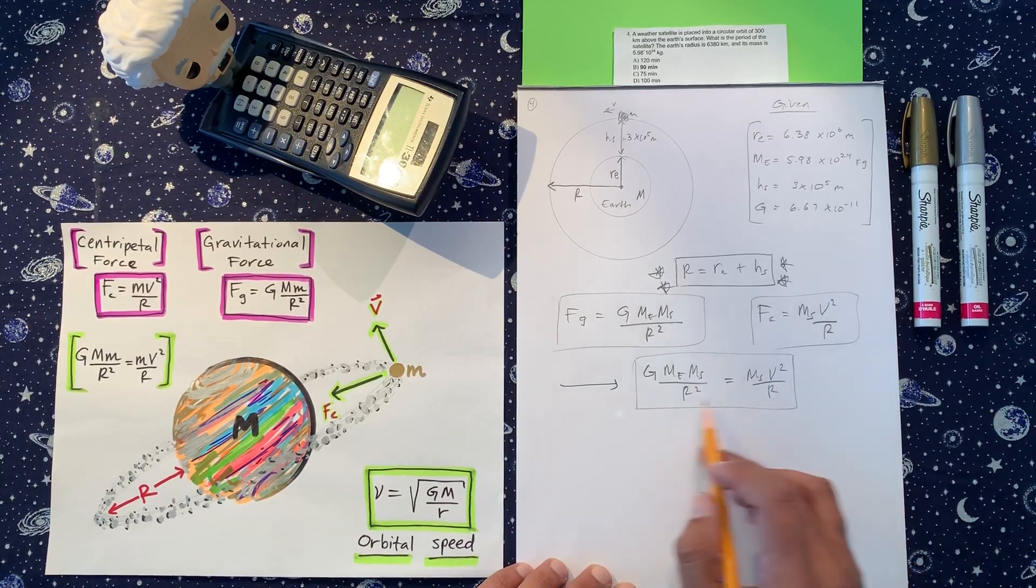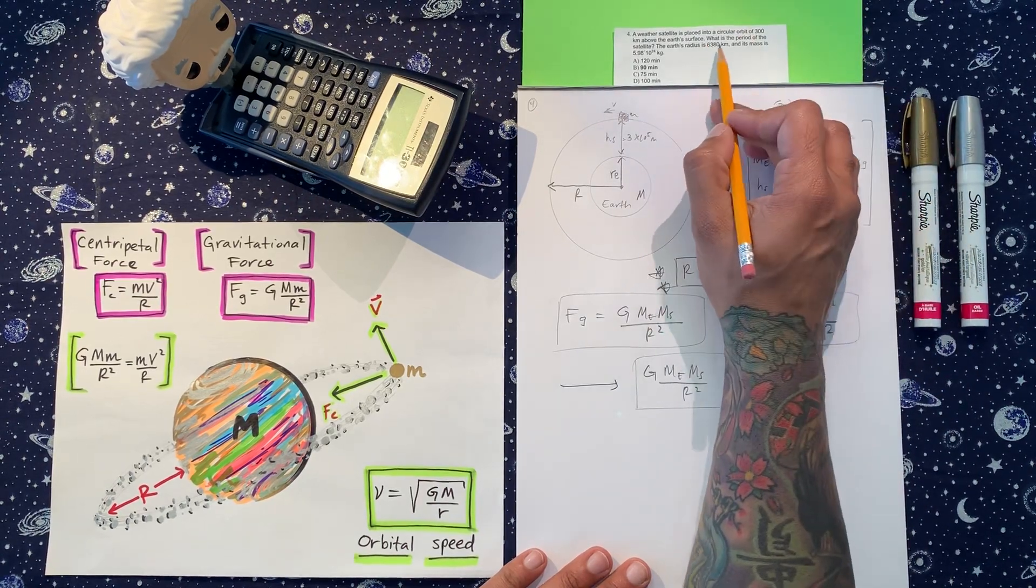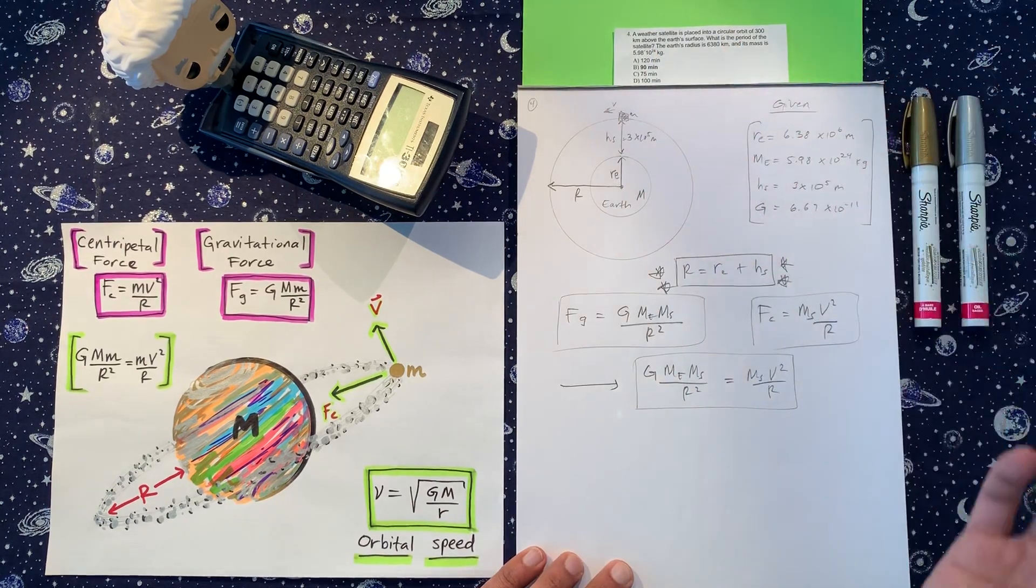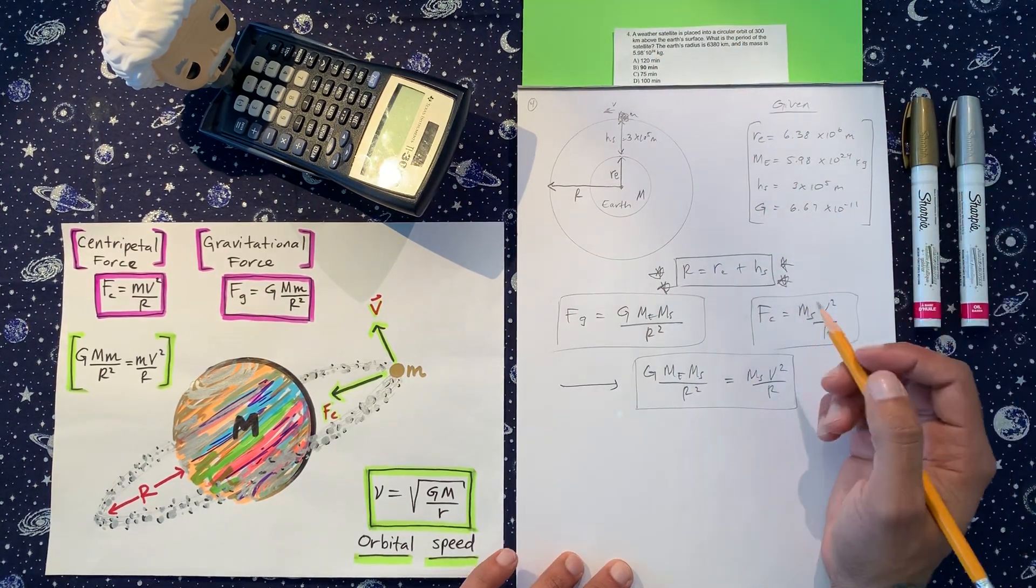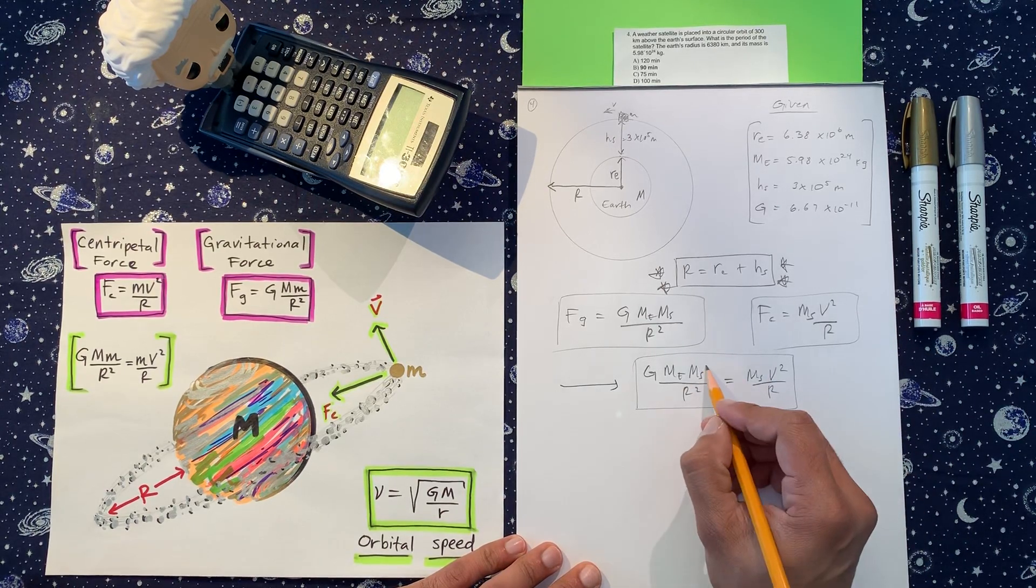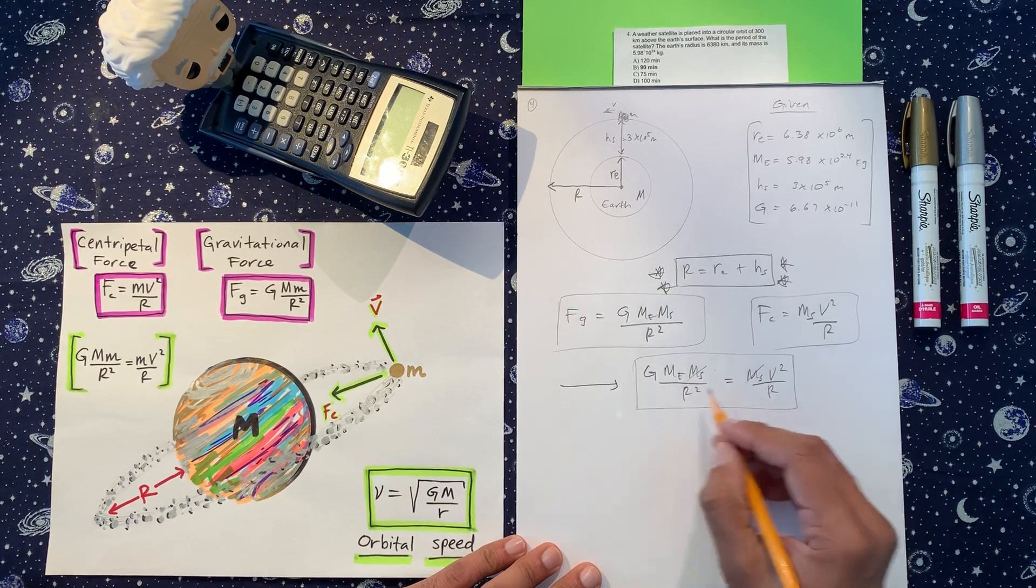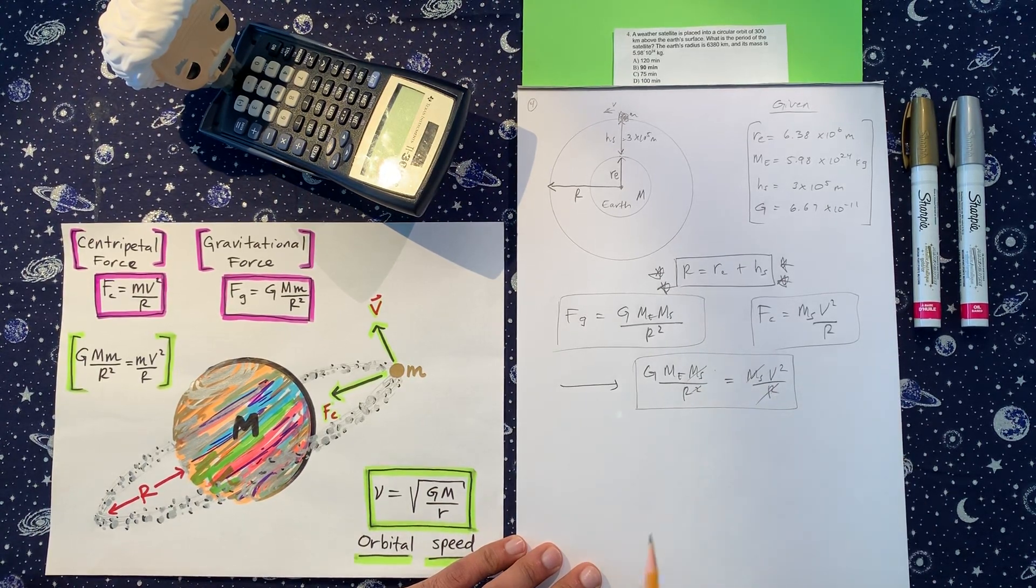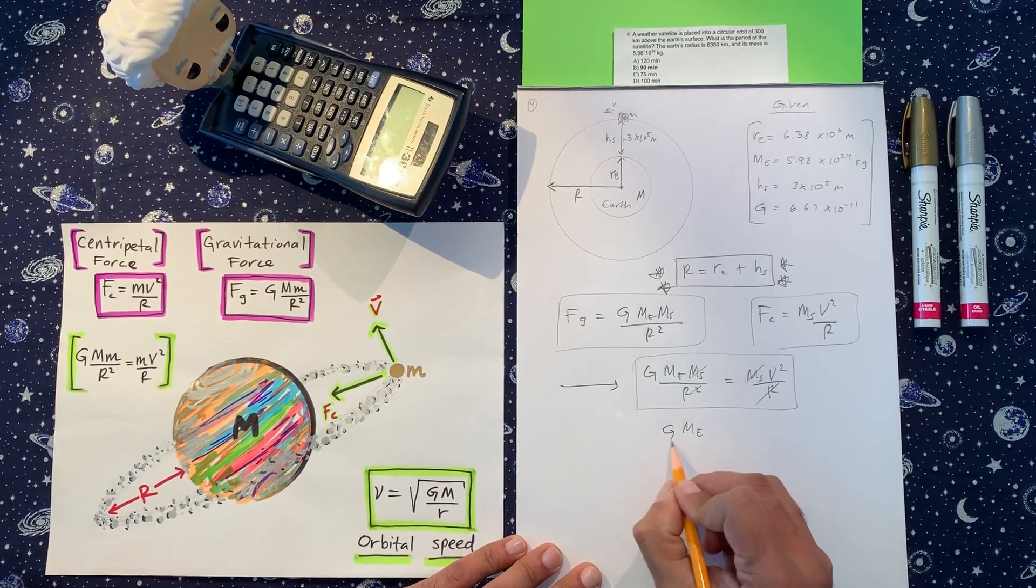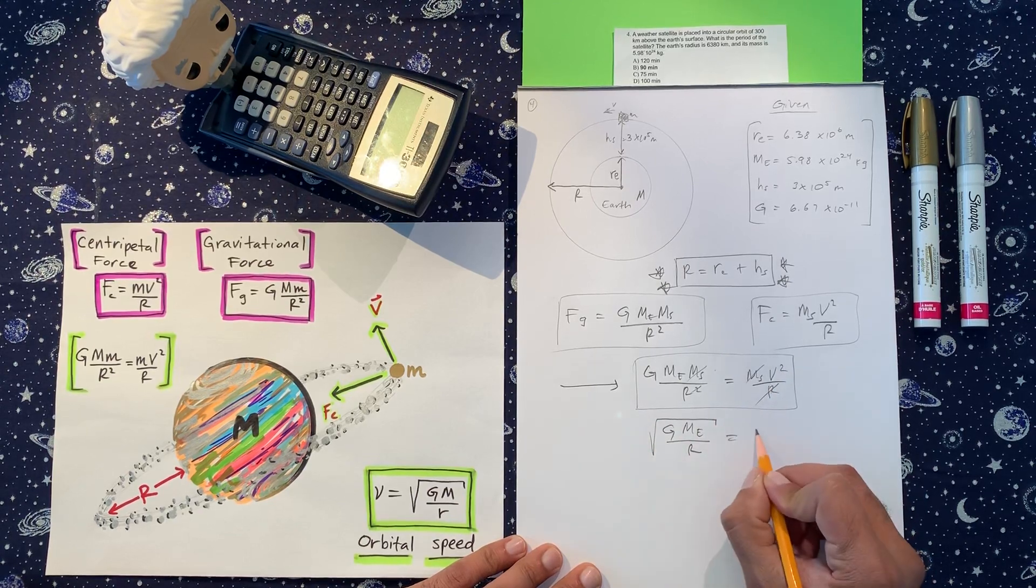So first thing we want to do here is calculate the velocity, because I think we need to find the period of the satellite. But steps into finding the period means that we need to find the velocity. So I'm going to cancel out the mass of the satellite. When I put this r up here, one of these cancel. So all I have left is G, mass of the Earth over r. And then this is square. So this is square rooted and velocity.